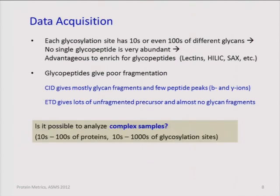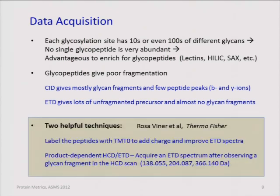How complex can we go for glycopeptide identification? We'd like to look at samples with potentially hundreds of proteins and thousands or even tens of thousands of potential glycosylation sites, which determines the size of the search.